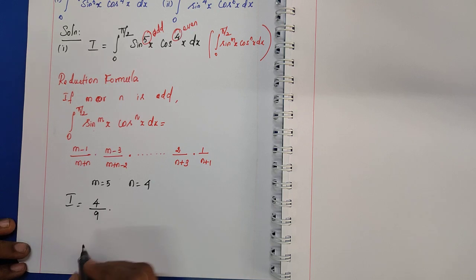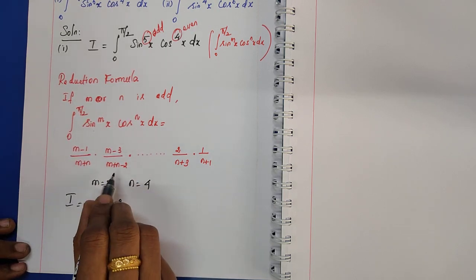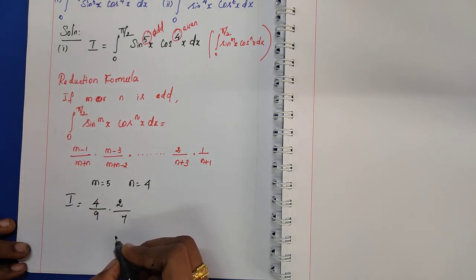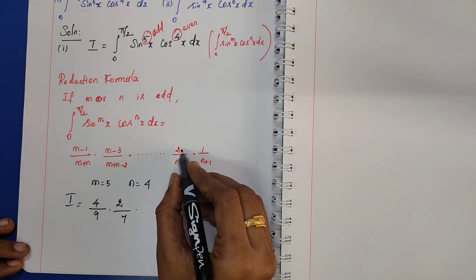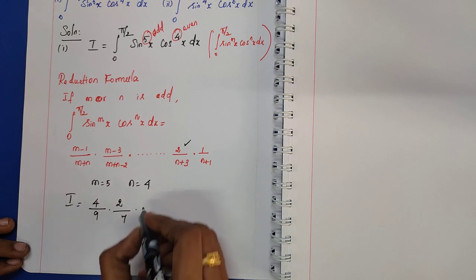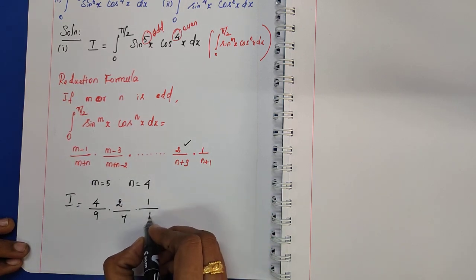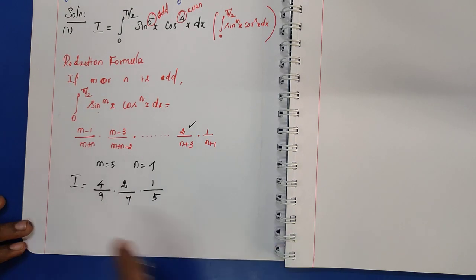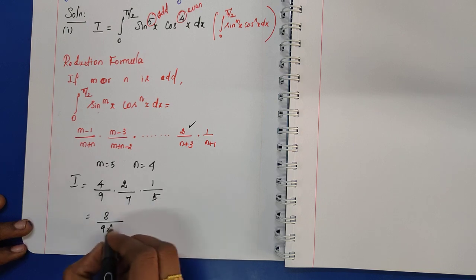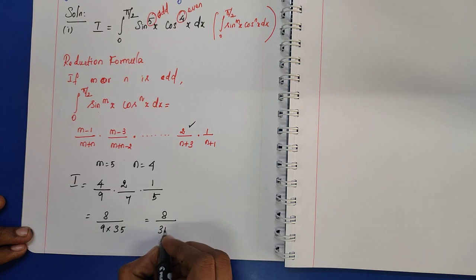m−1 is 4, m+n is 9, m−3 is 2, m+n−2 is 7. The numerator reaches 2, so the last term is 1/(n+1) = 1/(4+1) = 1/5. Simplifying: numerator is 4×2×1 = 8, denominator is 9×7×5 = 315. Therefore I = 8/315.